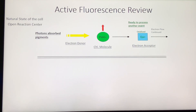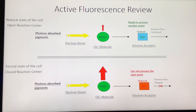A more detailed representation is described here, showing the photons absorbed by a cell in the natural state. Electrons are passed from the light absorption event to drive photosynthesis for plant growth. When we force the cells to stop the photosynthetic pathway, fluorescence increases. By ratioing the fluorescence output between the natural and forced states of the cell, we can determine how efficient the cell was at photosynthesizing.